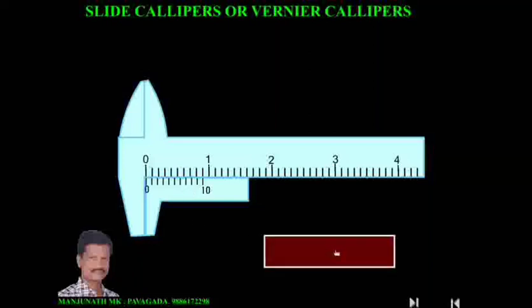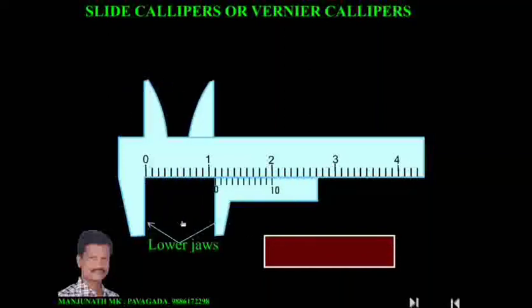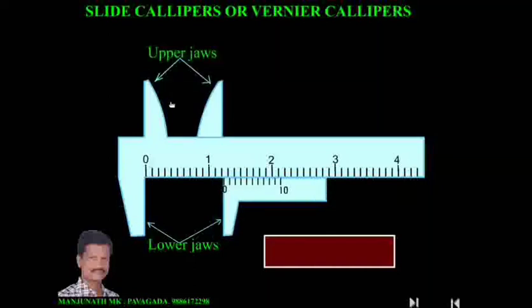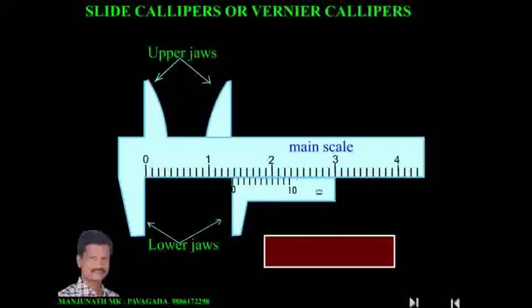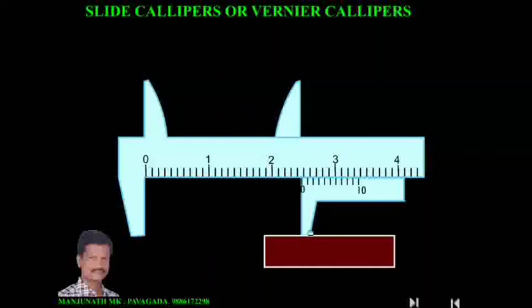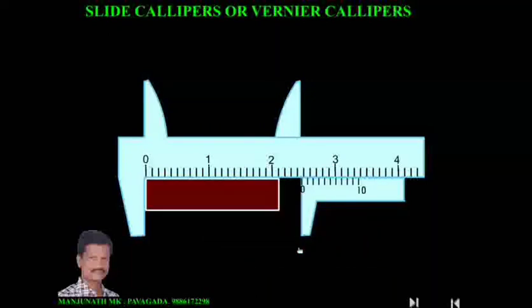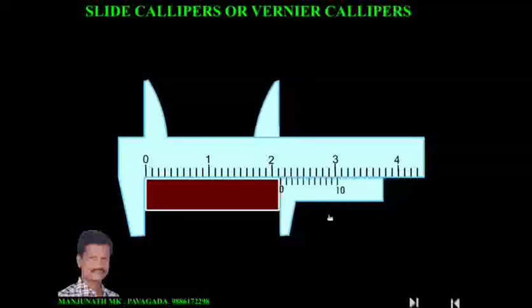Consider an object. In order to measure the length of this object, move the vernier scale like this. These two are the lower jaws and these two are the upper jaws. This is the main scale and this is the vernier scale. Place the object between the two lower jaws and move the vernier scale until it holds the object. The division just behind zero on the vernier scale is taken as the main scale reading — that is, MSR.